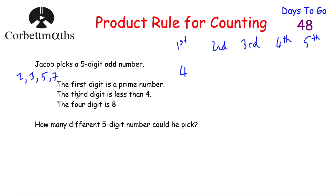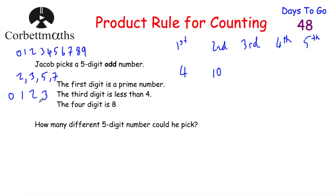For the second digit, we're not told anything, so it could be 0, 1, 2, 3, 4, 5, 6, 7, 8, or 9 — ten different choices. For the third digit, it's less than four, so it could be 0, 1, 2, or 3 — four choices. For the fourth digit, we're told it's eight, so there's only one choice. Finally, since the number is odd, the last digit must end in 1, 3, 5, 7, or 9 — five possible choices.